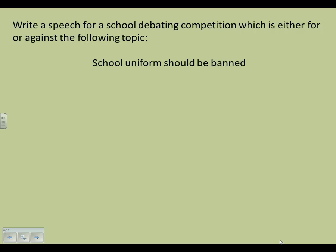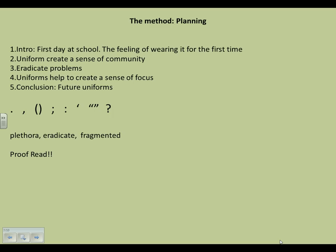This is a question you may get asked in the exam or for coursework: 'Write a speech for a school debate and competition, which is either for or against the following topic — school uniforms should be banned.' So I need to identify who it's for: it's for a school debate and competition, so I know it's for my peers, but because of the competition, I know it's formal. My planning — all I've done is list one to five points as ideas, things I could include. It's also a good idea to list the different types of punctuation, and as you go along when you're writing, just cross them off. I've also put down key bits of vocabulary I'd like to use, and at the bottom, rather than writing down all the elements of A-star, it's always a better idea to write down the elements of A-star you forget to do.